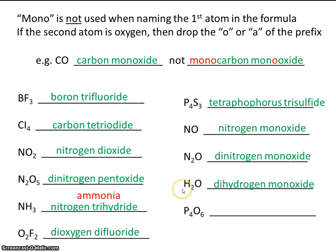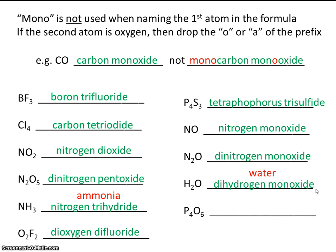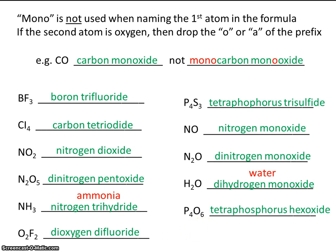Did you write down dihydrogen monoxide for this one? Maybe you did — of course, a better word would just be water, but dihydrogen monoxide is the correct official name for water. Finally, four phosphorous and six oxygens gives us tetraphosphorous hexoxide.